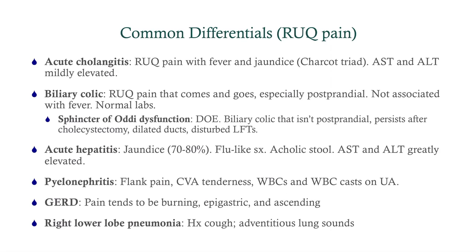For common differentials: cholangitis will have Charcot's triad — it's an infection of the biliary ducts, so the patient looks similar but will also have jaundice. Biliary colic is like how she was before — postprandial right upper quadrant pain that comes and goes without fever or elevated white count; what she has now will not go away. Acute hepatitis will have jaundice, flu-like symptoms, acholic stools, and greatly elevated AST and ALT — very high transaminases suggest hepatocellular pathology. Pyelonephritis presents with flank pain, CVA tenderness, and an abnormal urinalysis. Reflux disease is epigastric burning pain that ascends. Right lower lobe pneumonia — look for pulmonary symptoms.